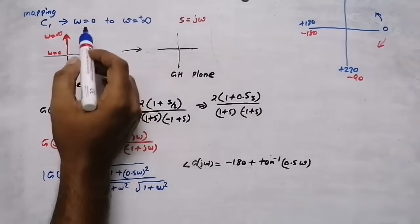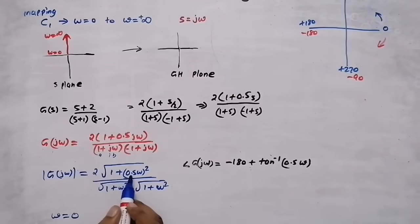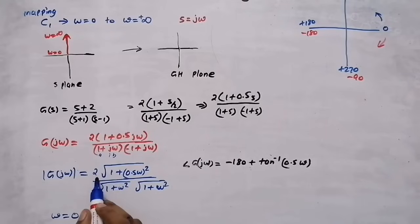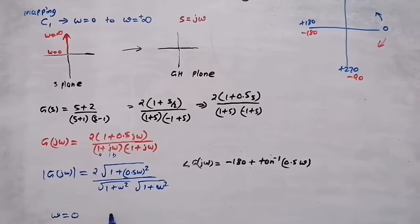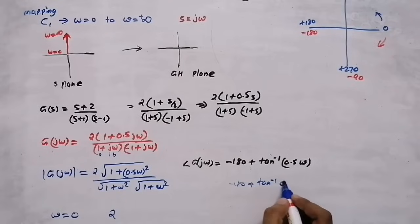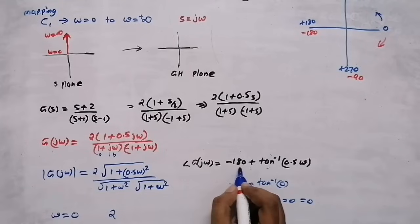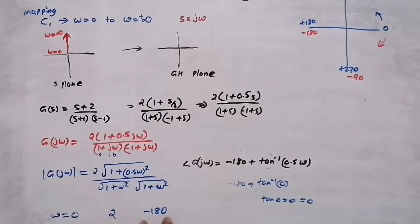With omega varying from 0 to infinity, at omega equal to 0: the magnitude is 2 times root(1) divided by 1, giving magnitude equal to 2. The phase angle is minus 180 plus tan inverse 0, and since tan inverse 0 is 0, the angle is minus 180 degrees. So magnitude is 2 and angle is minus 180 degrees.